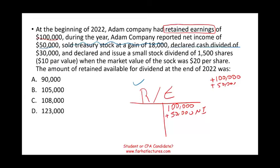The company declared a cash dividend of $30,000. You need to understand that a cash dividend will reduce retained earnings by $30,000. So net income increases retained earnings and dividends reduce it. With these items, you can begin computing ending retained earnings.